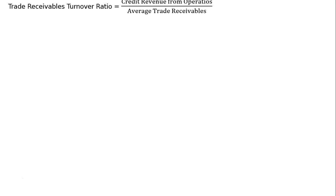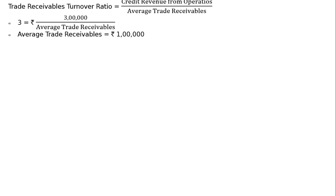Trade receivables turnover ratio equals credit revenue from operations divided by average trade receivables. So 3 equals ₹3 lakh divided by average trade receivables. This implies average trade receivables equals ₹1 lakh. Now let opening trade receivables be Z.